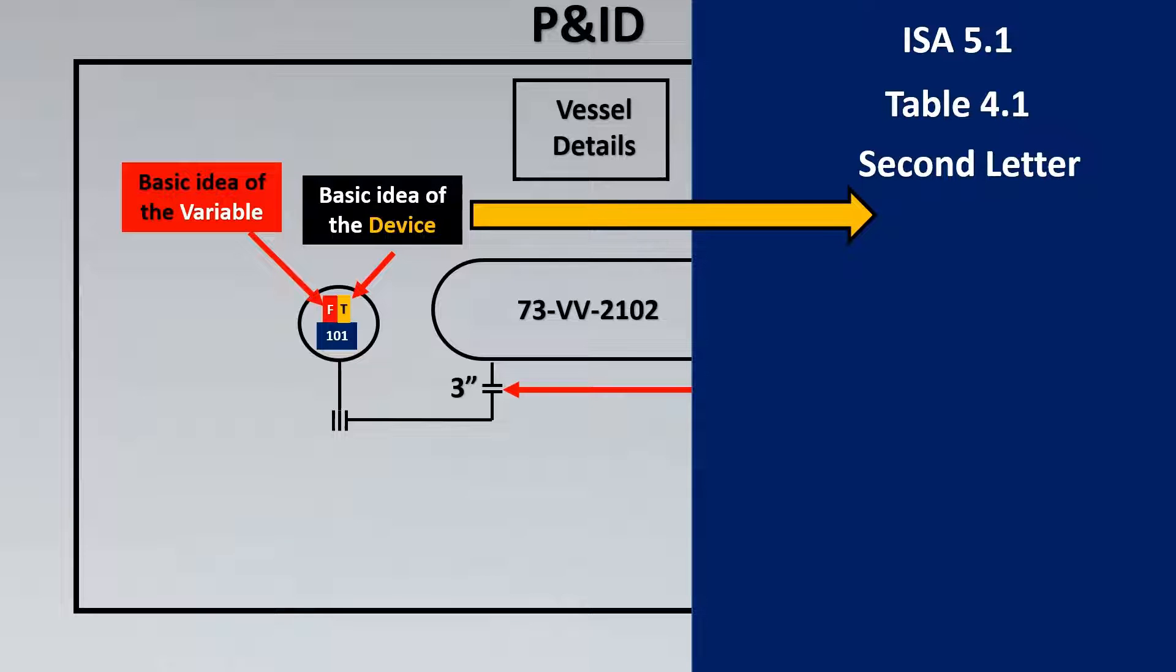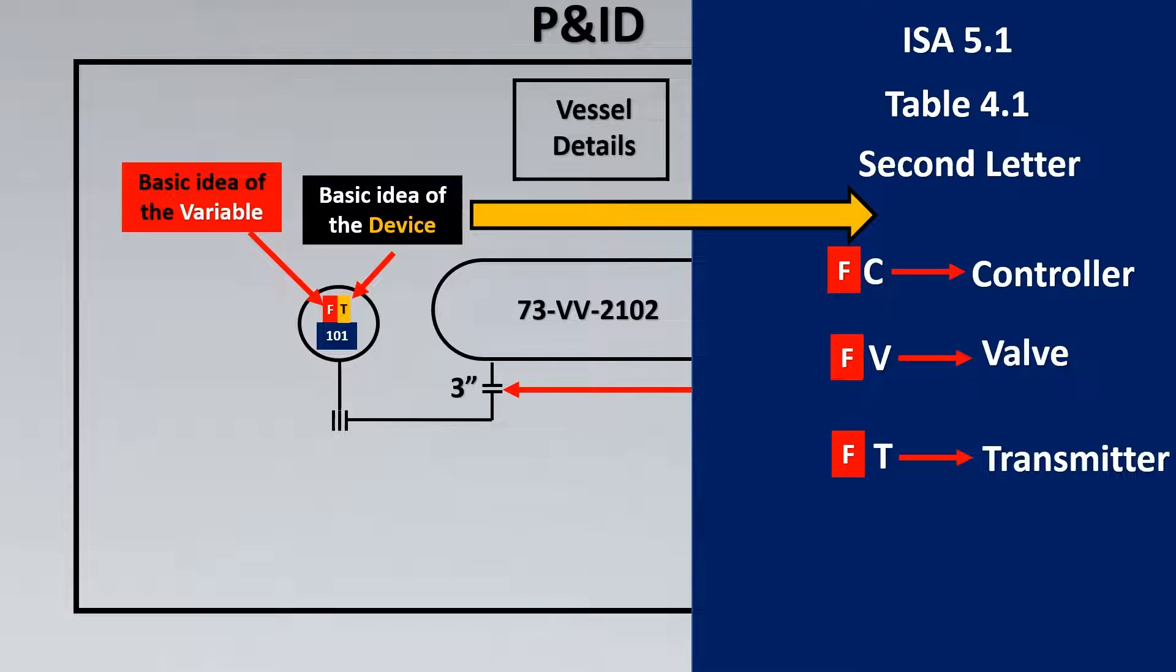Now we'll try to look at the second letter or the second variable which is sometimes it could be a C. So F was the variable, right? So FC would be flow controller. FV would be flow valve, so the V stands for valve. T stands for transmitter.